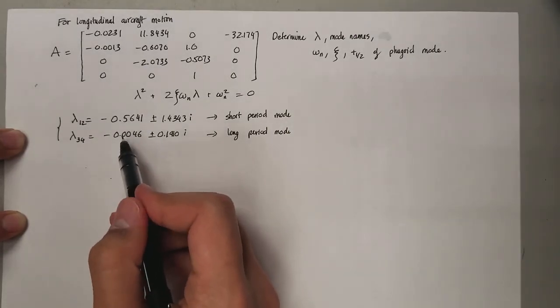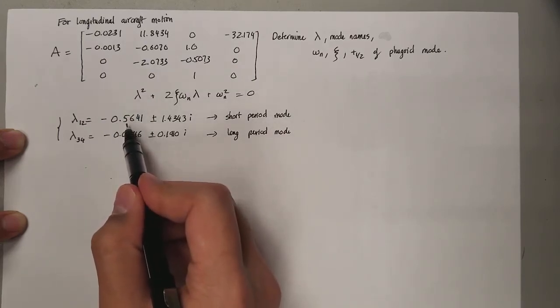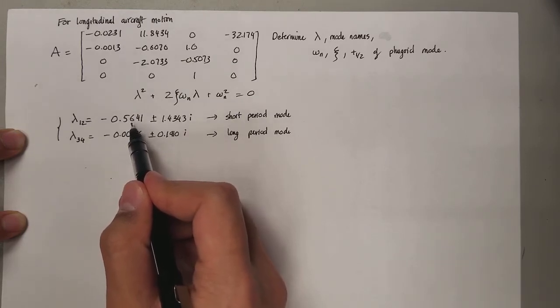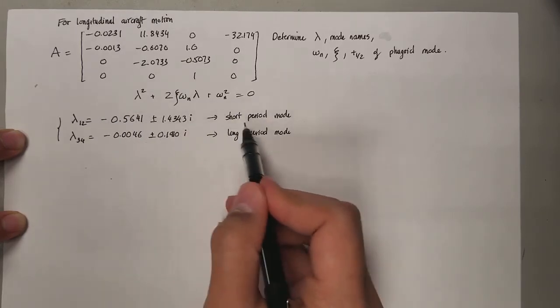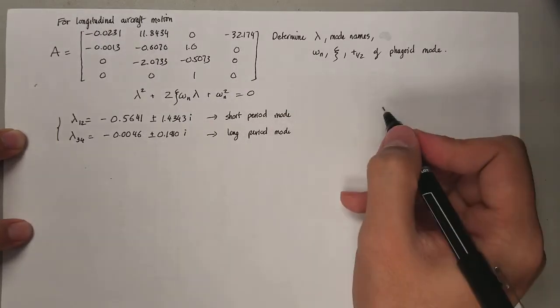Why is that? Well, if you look at the real components of each of these complex pairs of eigenvalues, you can see that this is much more negative than this one. Whichever has a much more negative real component is going to be the short period and the other is going to be long period.